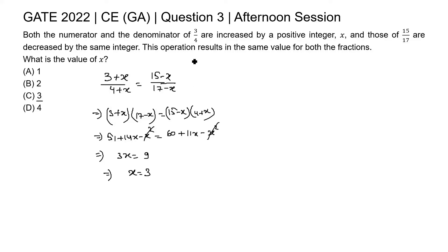This type of question can also be solved with the given options. This is a kind of trick. The equation is 3 plus x by 4 plus x equal to 15 minus x by 17 minus x. No need to solve this equation, just put the given options in this equation then we can see whether the option is satisfying this equation or not.